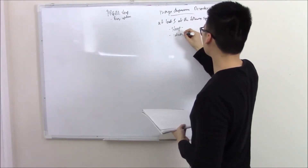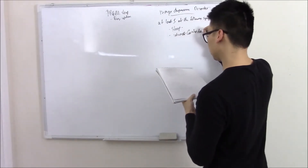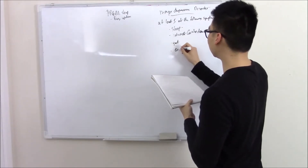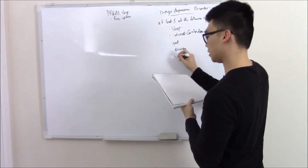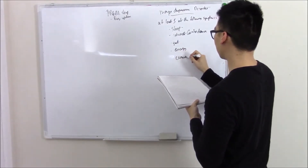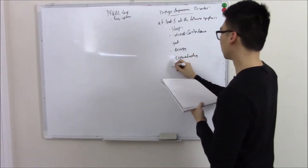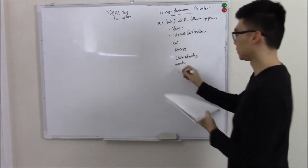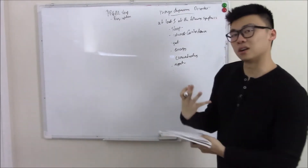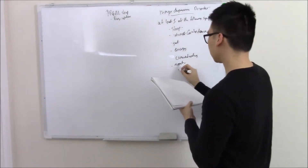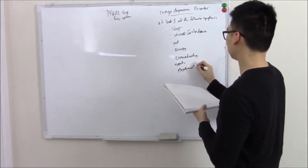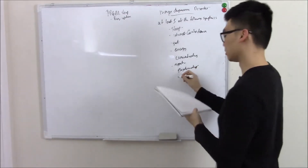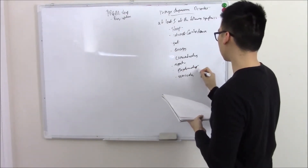Loss of interest is a big one — we call it anhedonia. Feelings of guilt are common. Changes in energy, so loss of energy is common. Loss of concentration — they might feel like they're not able to concentrate as well. Changes in appetite, whether decreased or increased, usually decreased. They feel like they're not eating as much or don't feel hungry. Psychomotor changes, whether agitation or psychomotor retardation.